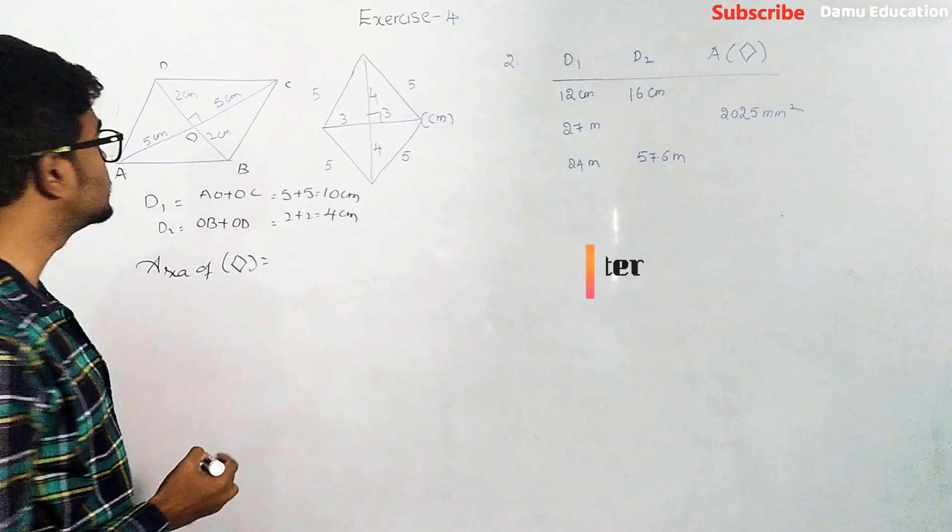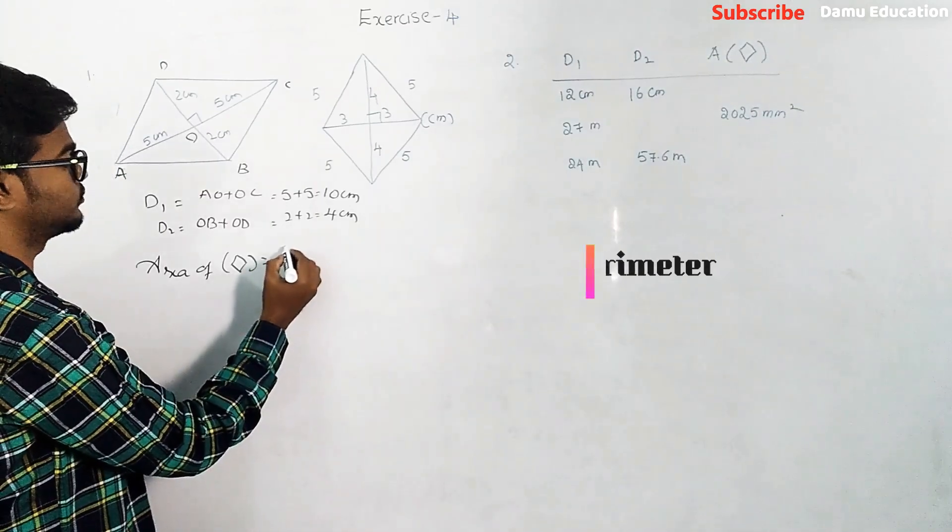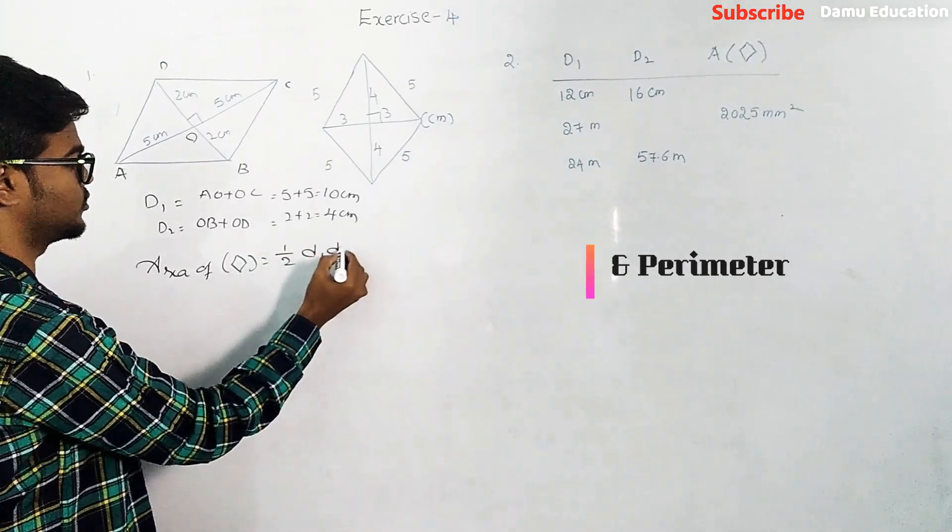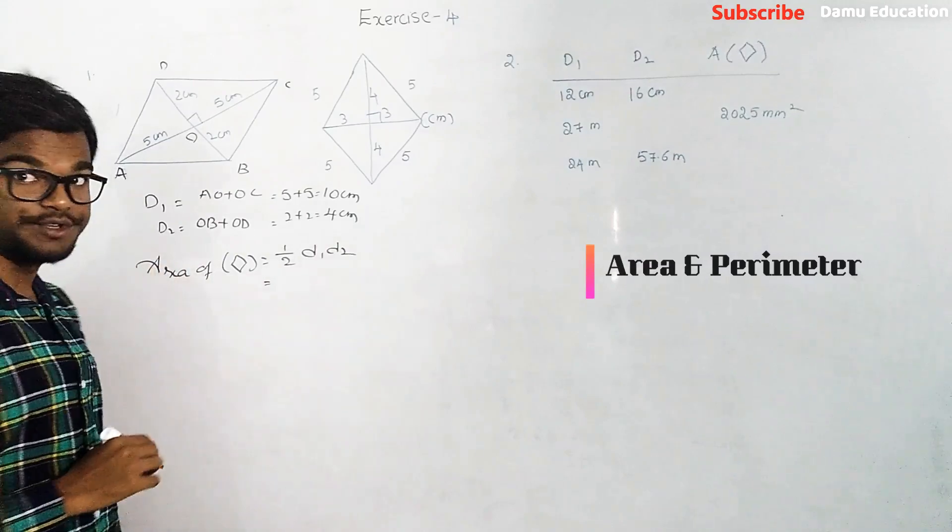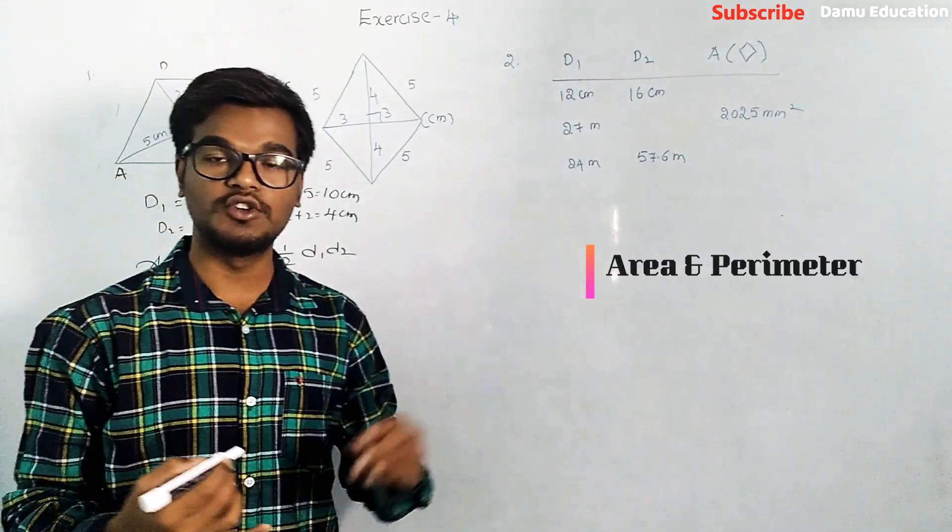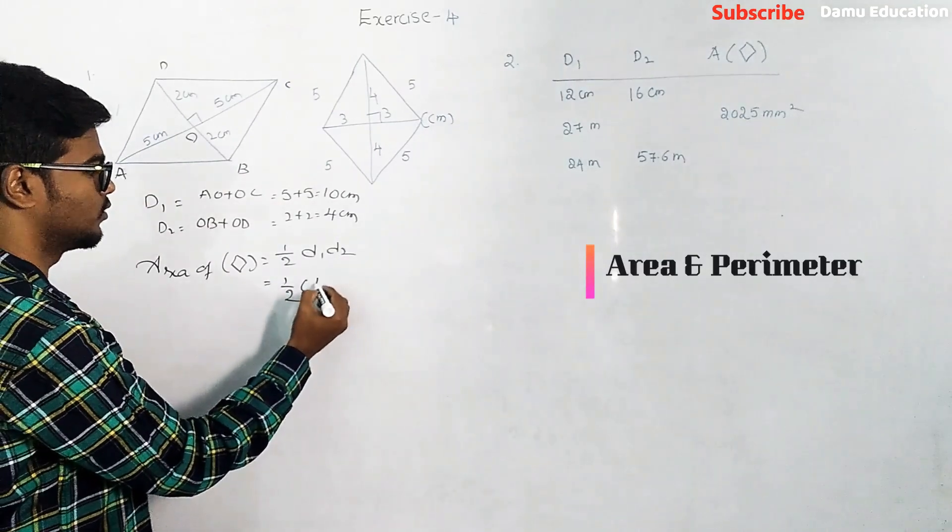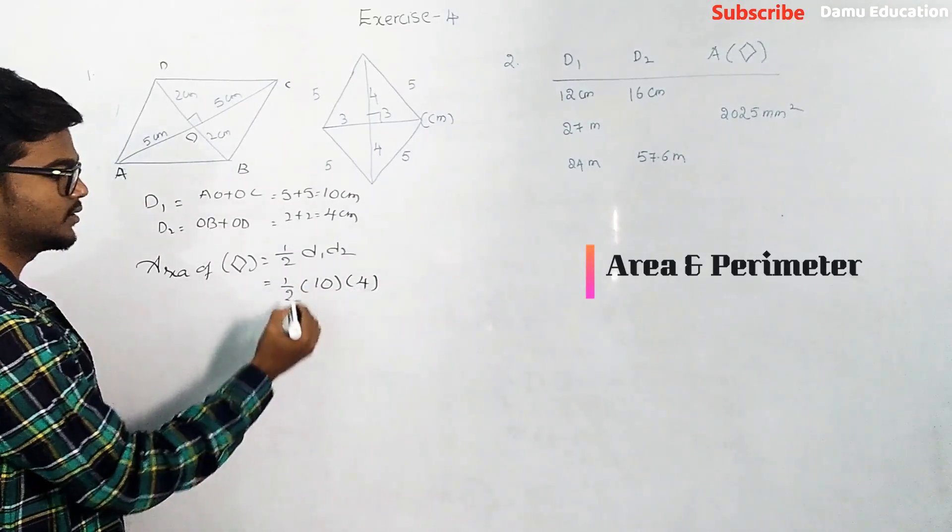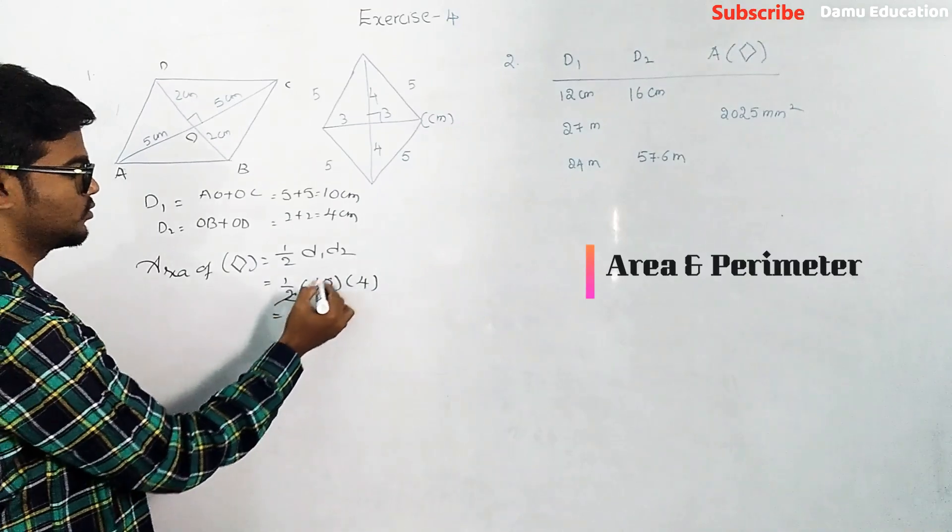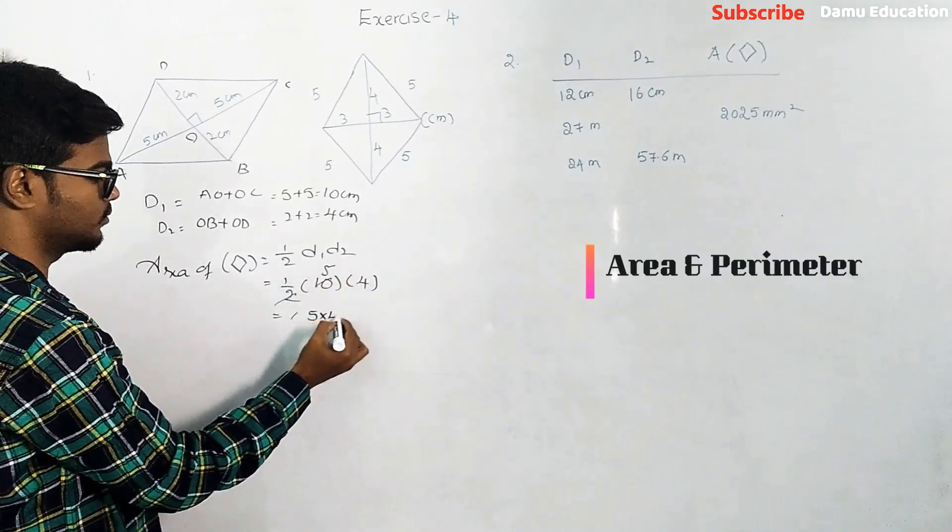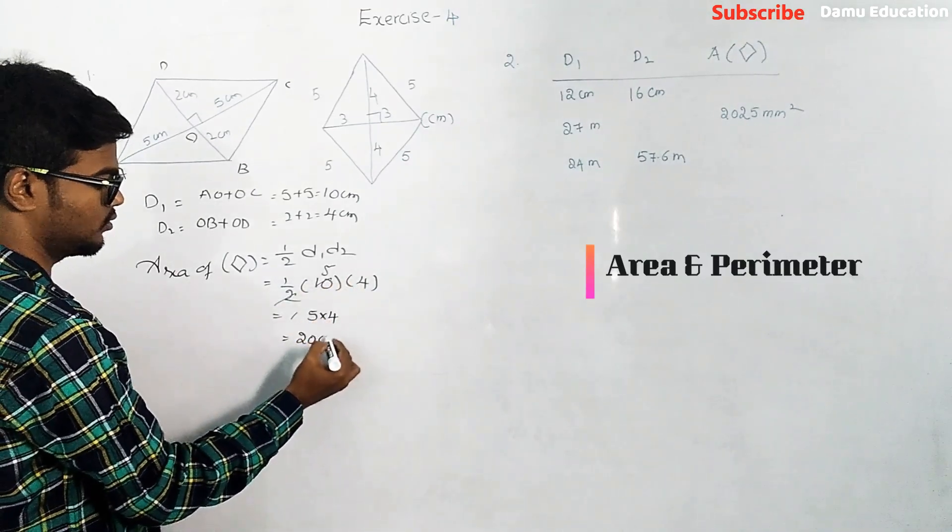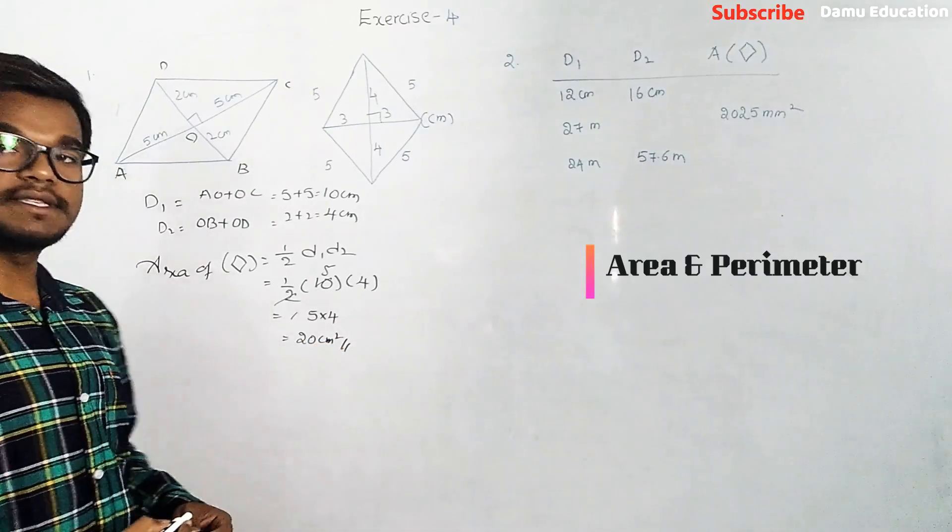So the area of rhombus ABCD will be equal to half into d1 times d2. So half into 10 into 4. So 2 goes into 10 five times, 5 times 4, so area of first rhombus will be equal to 20 centimeter square.